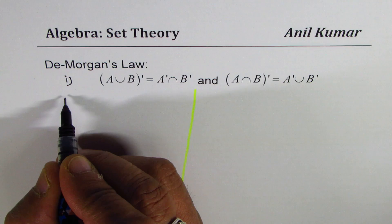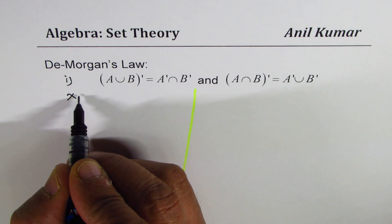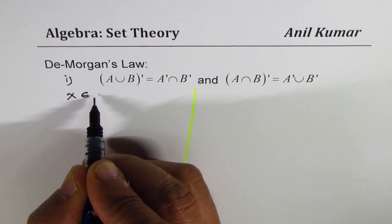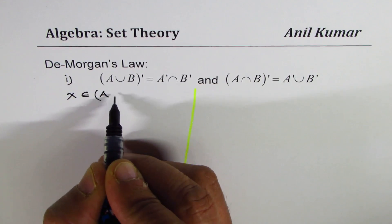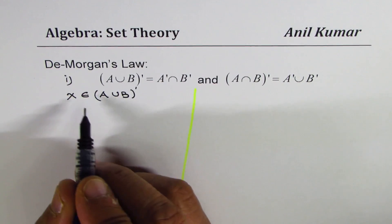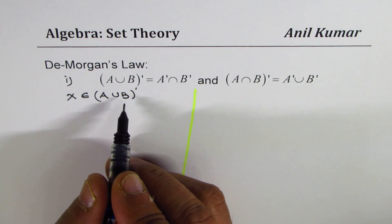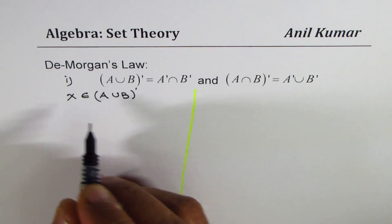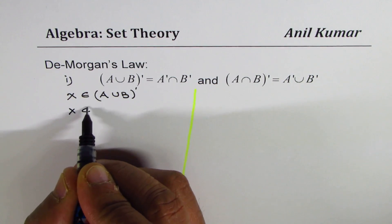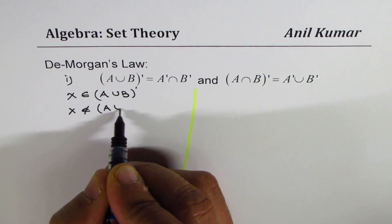Now to prove it, let us say that we have any x element which belongs to the complement of A union B. So if it belongs to complement of A union B, that means that x does not belong to A union B.